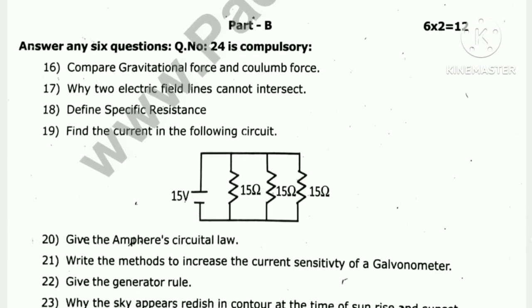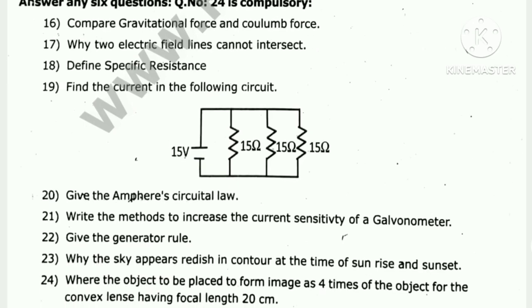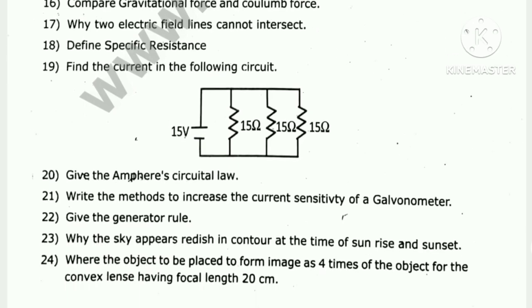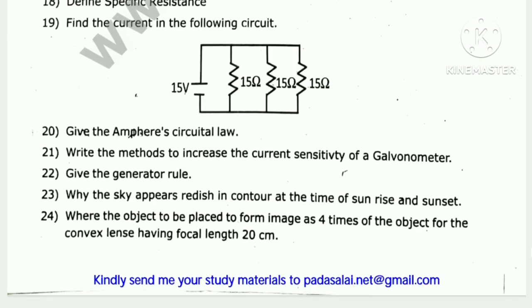Compare gravitational force and Coulomb force. Why two electric field lines cannot intersect. Define specific resistance. Find the current in the following circuit. Give Ampere's circuital law. Write the methods to increase the current sensitivity of a galvanometer. Give the generator rule.